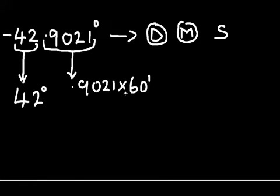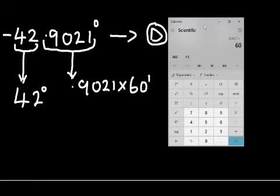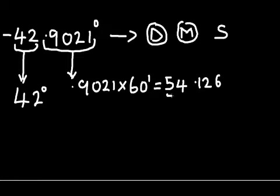So let's multiply 0.9021 by 60. That gives us 54.126. So 54 becomes the minute conversion.